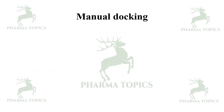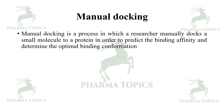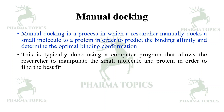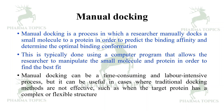Next is manual docking. Manual docking is a process in which the researcher manually docks a small molecule to a protein in order to predict the binding affinity and determine the optimal binding conformation. This is typically done using a computer program that allows the researcher to manipulate the small molecule and protein to find the best fit. Manual docking can be time-consuming and labor-intensive, but it can be a valuable tool in cases where traditional docking methods are not effective, such as when the target protein is complex or a flexible structure.